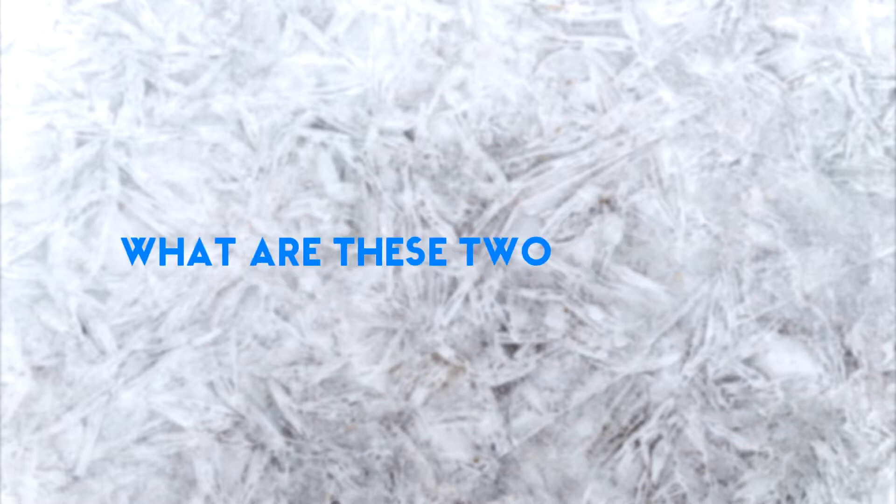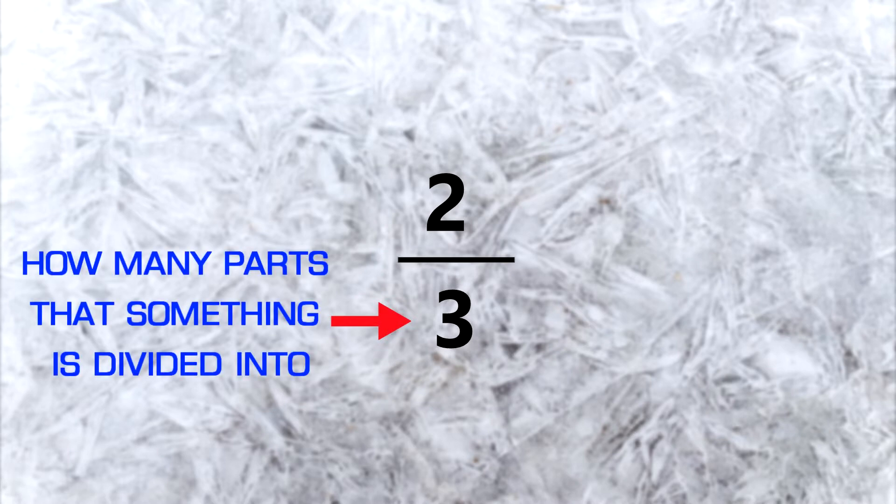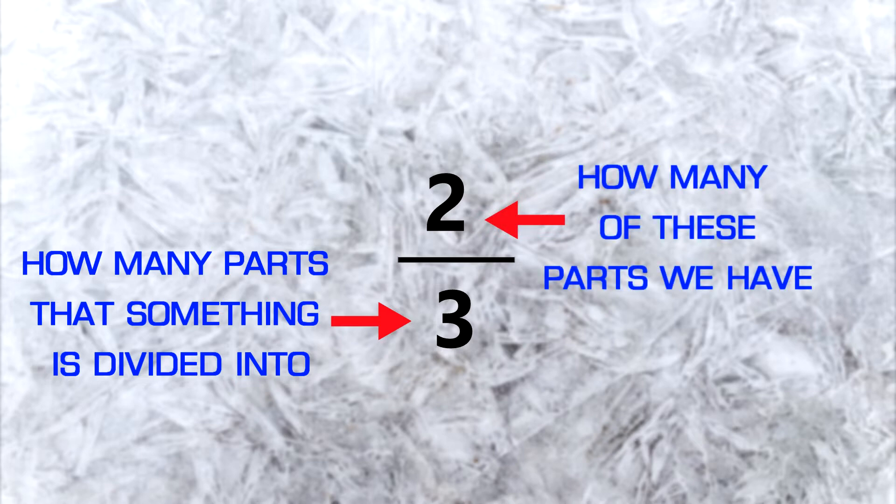This is how the fractions are denoted in mathematics. Now let's see what are these two numbers. Remember, fractions are used to represent parts of something. So the number on the bottom tells us how many parts that something is divided into. The number on the top tells us how many of these parts we have.